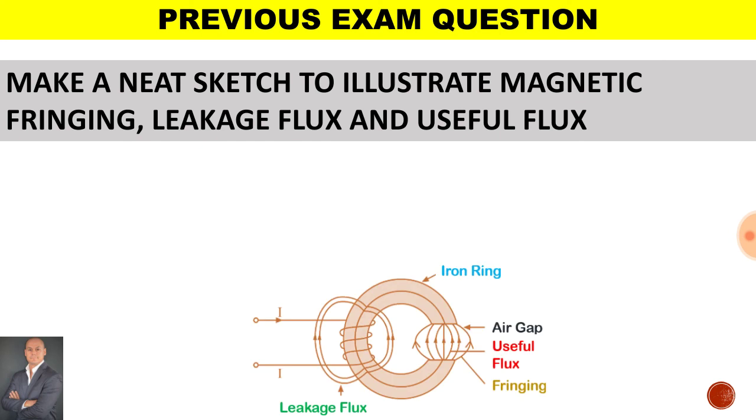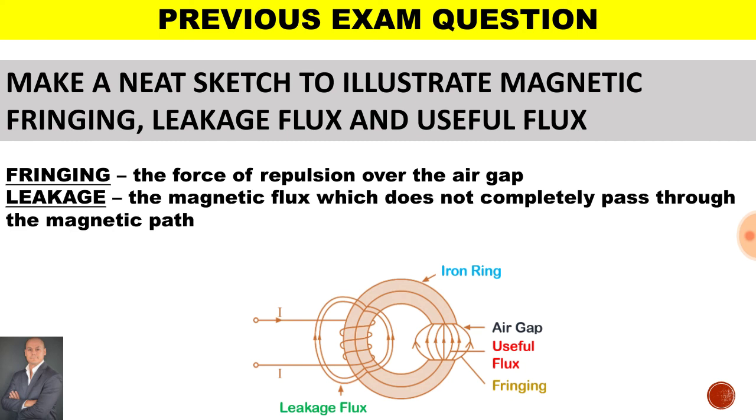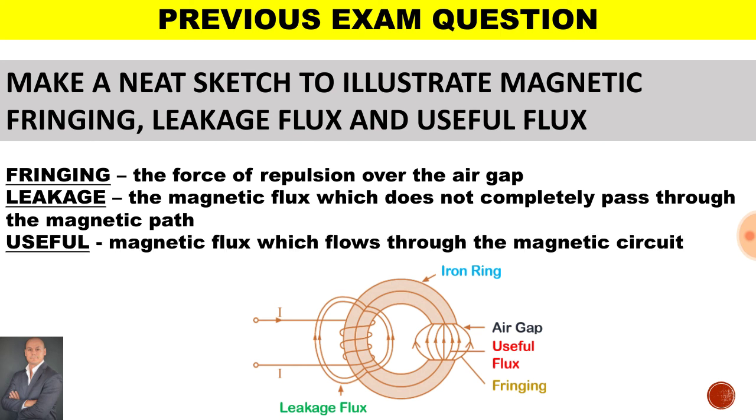This is the illustration. Now fringing flux is the force of repulsion over the air gap. Leakage flux is the magnetic flux which does not completely pass through the magnetic circuit. And the useful flux is the magnetic flux which flows through the magnetic circuit.